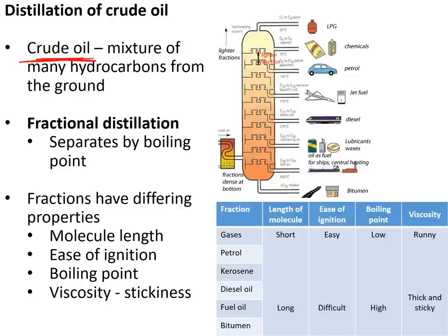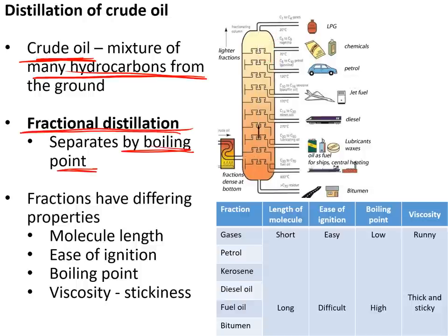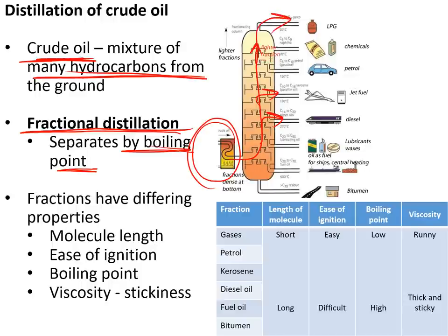Crude oil is a mixture of many different hydrocarbons extracted from deep underground. To separate them we use fractional distillation, which separates compounds according to their different boiling points. The crude oil is heated and vapours rise up the fractionating column; as they rise they cool, and each compound condenses at its own boiling point. Substances with the lowest boiling point travel furthest up the column, while those with higher boiling points condense lower down.